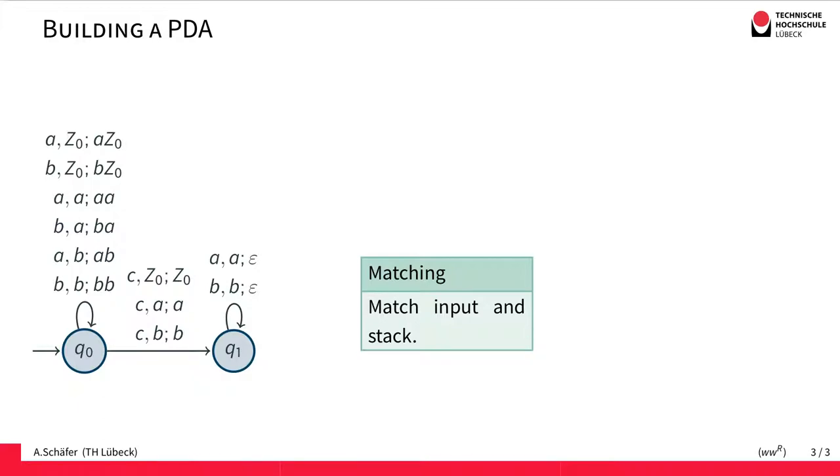So if we read an A and the topmost symbol is an A, then we pop it. And similarly for the B, if the next letter is a B and the topmost letter is a B, then it's simply popped from the stack. And this, of course, only works if it's really the reverse of the initial part of the word.